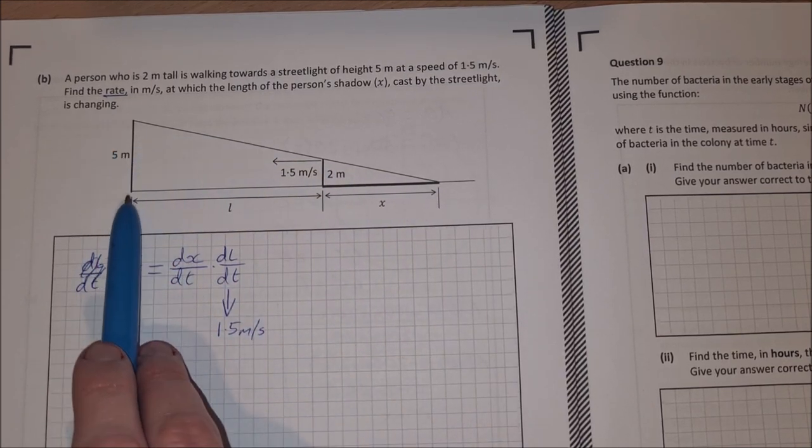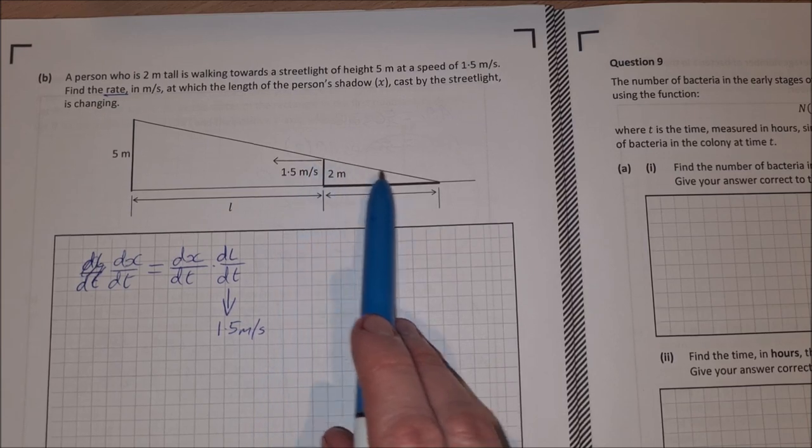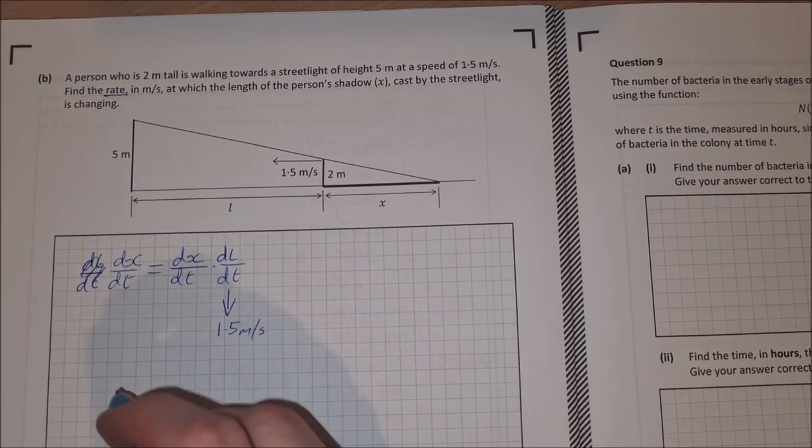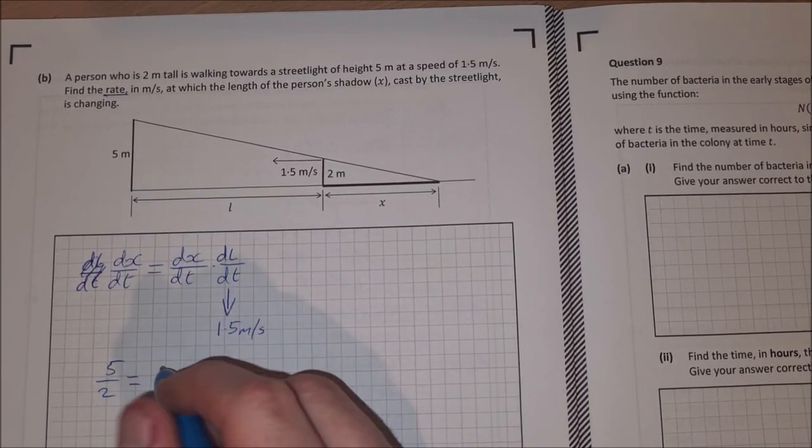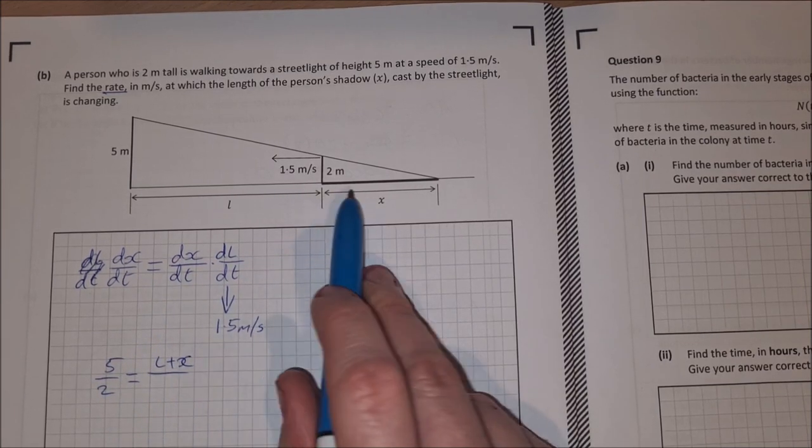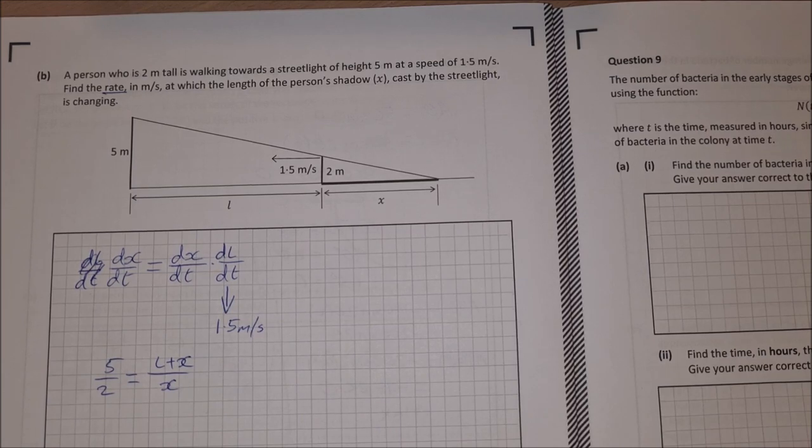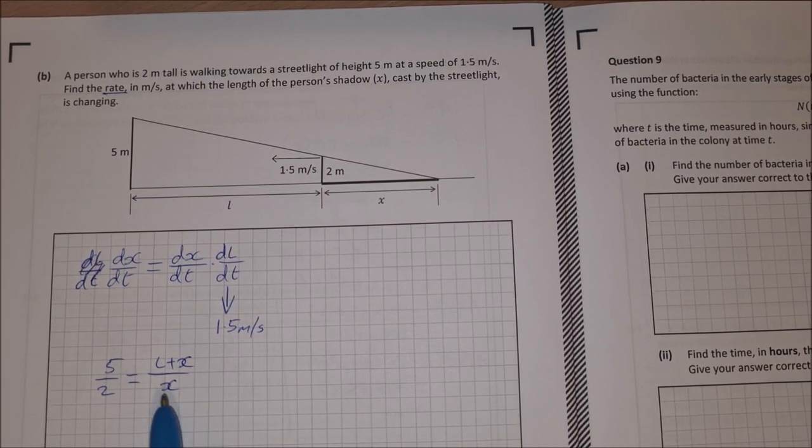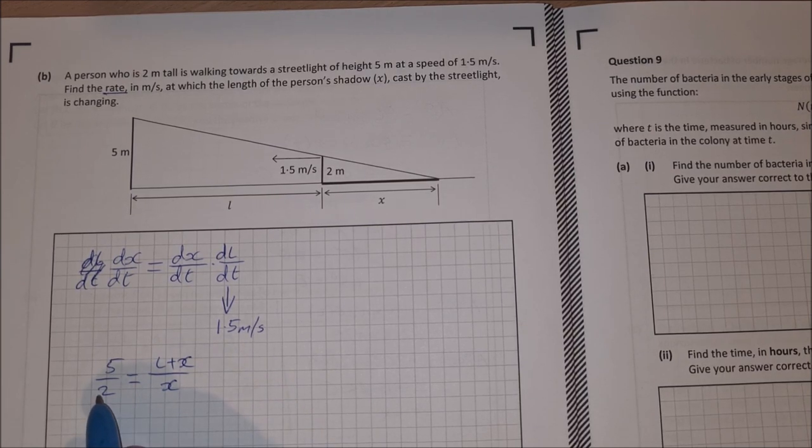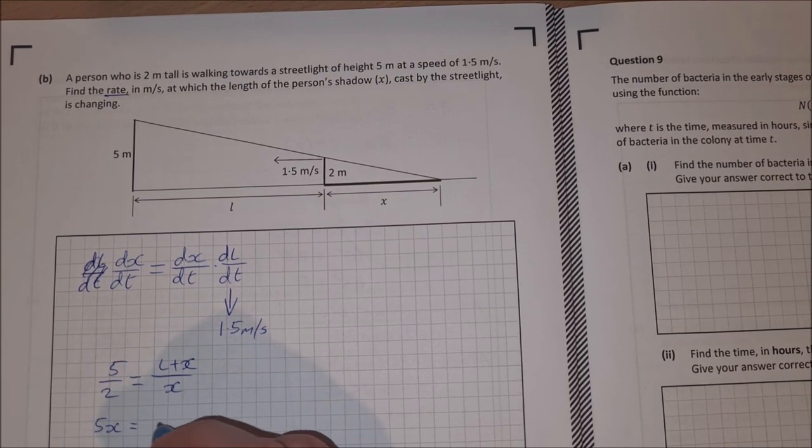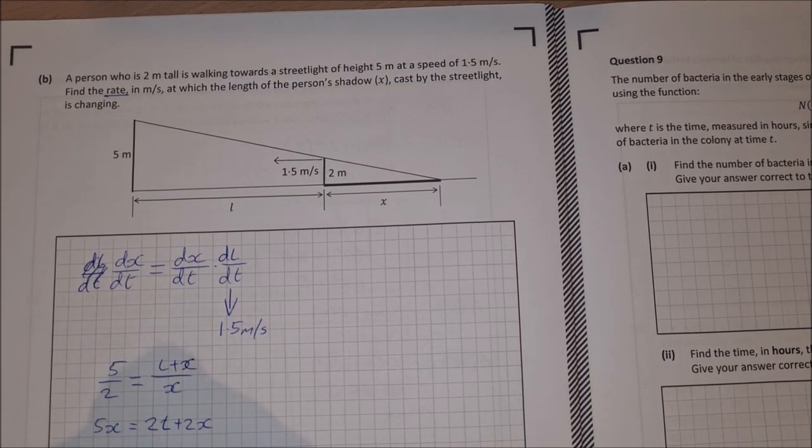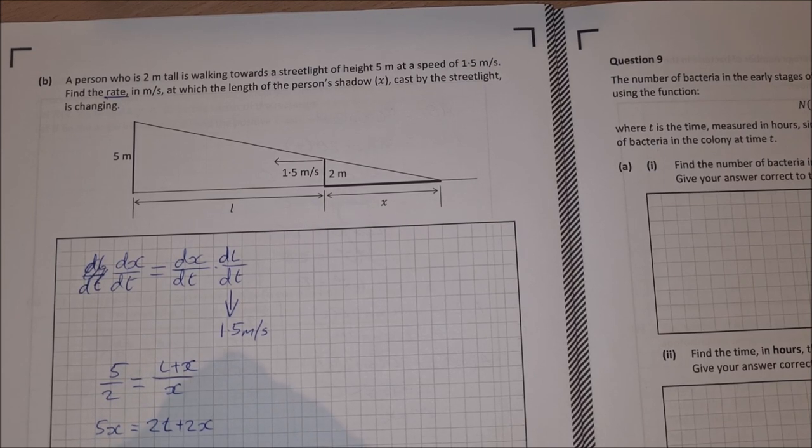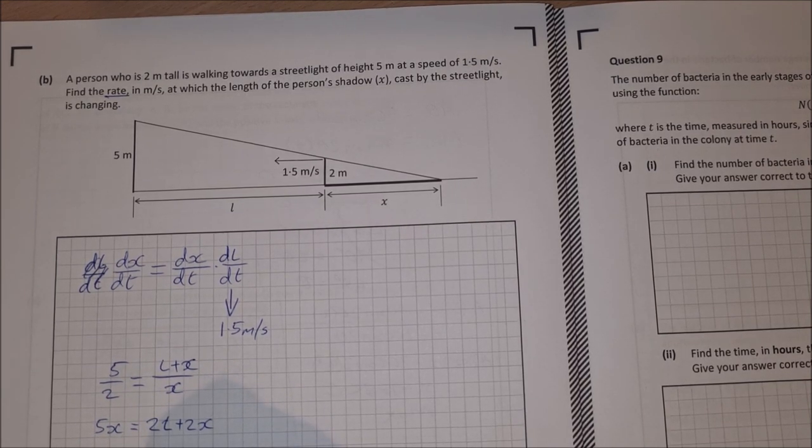So for this, I'm going to use similar triangles. I have this big triangle here and then I have this small triangle here. And what I'm going to do is 5 over 2 is equal to this length, which is L plus x over this length here, which is x. And now what I'm going to do is I'm going to try and write x on its own in terms of L. So multiply across by 2 and multiply across by x. That would give me 5x is equal to 2L plus 2x. So then take 2x from both sides. That's 3x is equal to 2L. So x is equal to 2 over 3L.